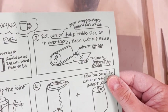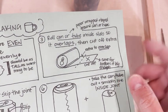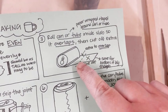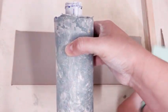Step three is to take your can or tube that's wrapped in paper, put it inside your slab, and roll it. Make sure you have some overlap. You don't want to cut it right next to it. You want to make sure you have overlap and then cut off the other side.